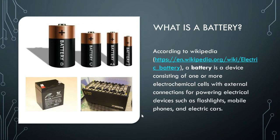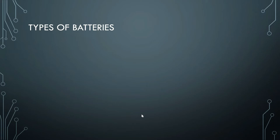Very common chemicals used in batteries would be nickel, cadmium, mercury, carbon, and zinc. Quite a lot of chemicals are used for batteries.